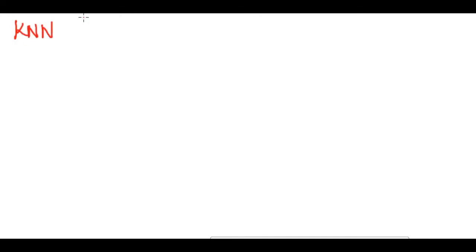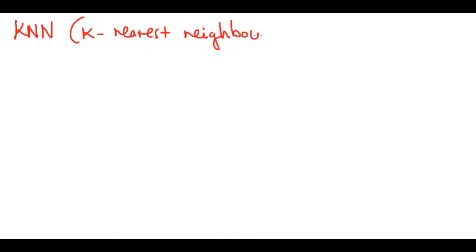Let's talk about an example of a classification algorithm called KNN - K-Nearest Neighbors. We're just going to do the high-level stuff for now; we'll get deep into KNN later.